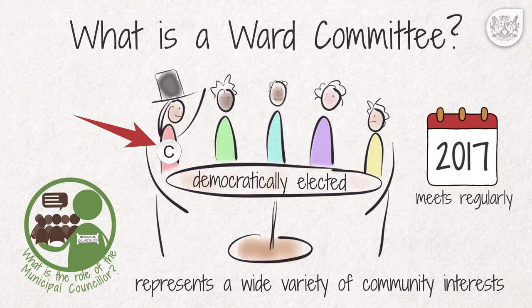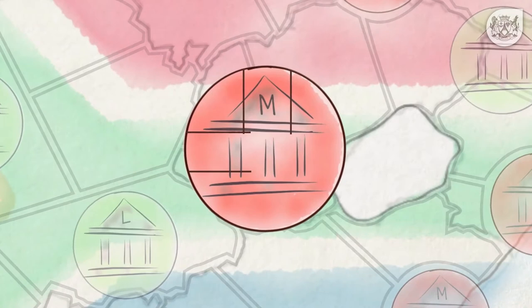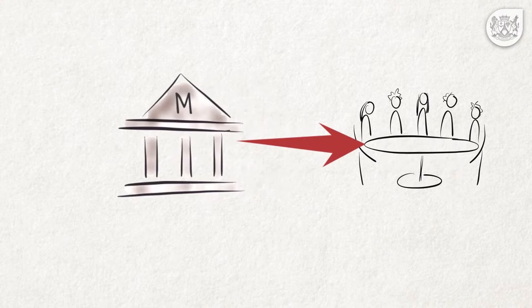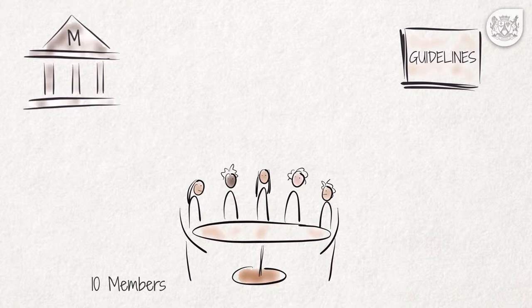How are ward committees established? A municipality has the power to decide to have ward committees, and if it does so, it has to establish ward committees for all the wards within its boundaries. The municipality also decides the process through which ward committee members are elected following the official guidelines. Ward committees may have up to 10 members that must include women and may also include representatives from special interest groups active in areas such as business and commerce, education,